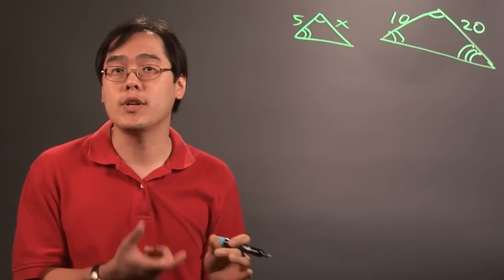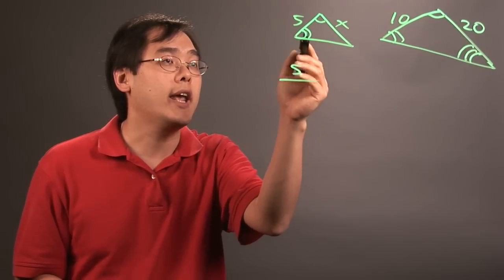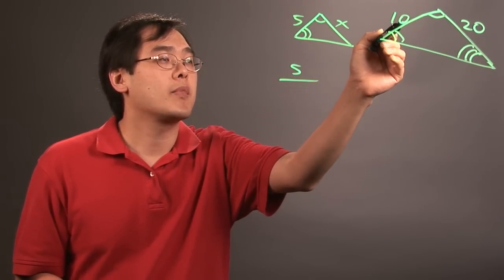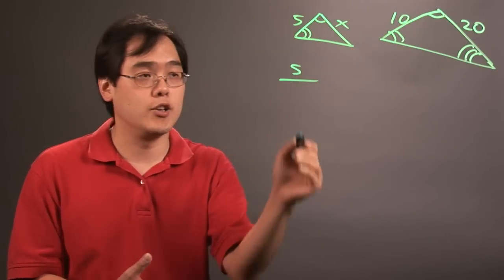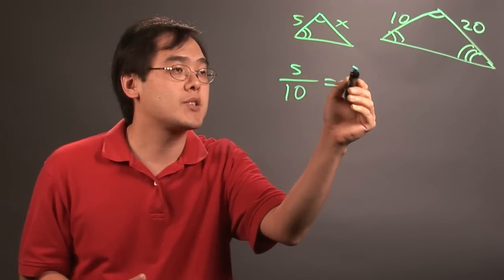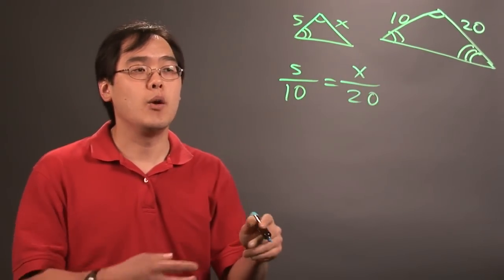So you got to do it in both sides of the equation. So what you have here is 5 over, and you want to, for the denominator, you want to put the corresponding side on the other triangle. So it would be 5 over 10, and that's going to equal to x over the other corresponding side is going to be 20.